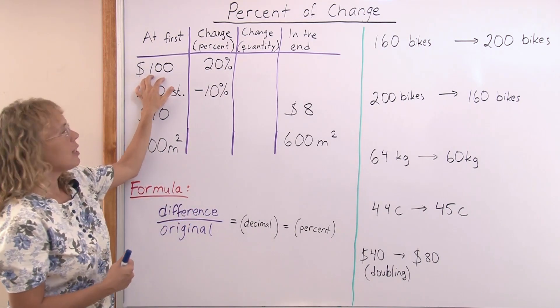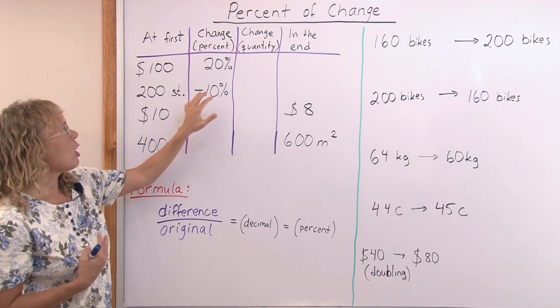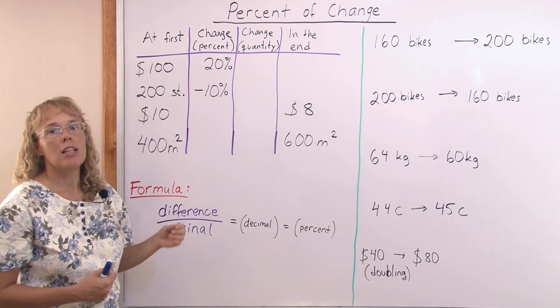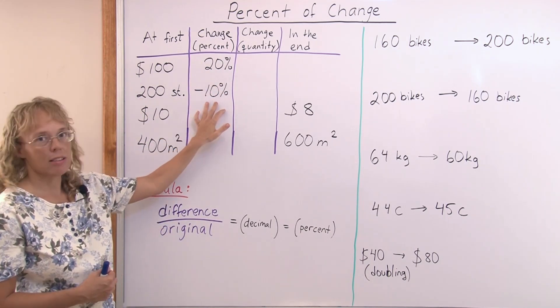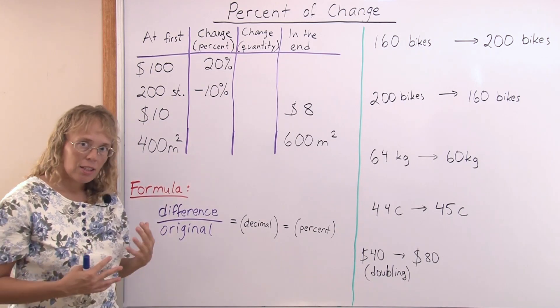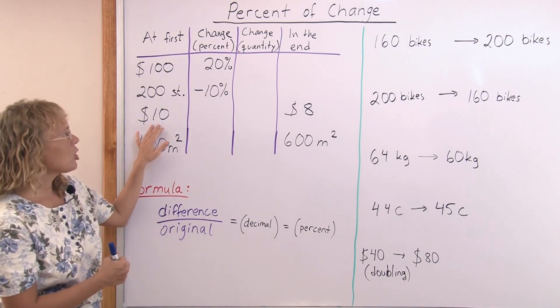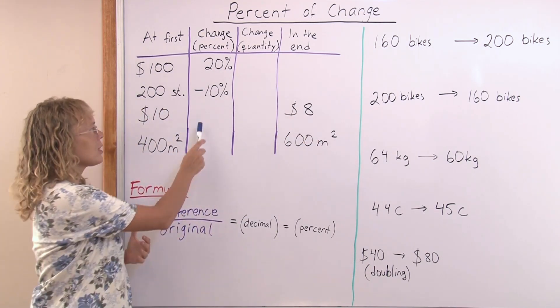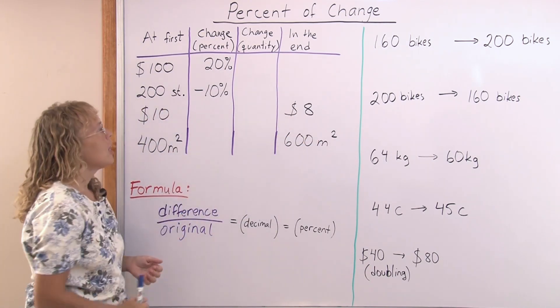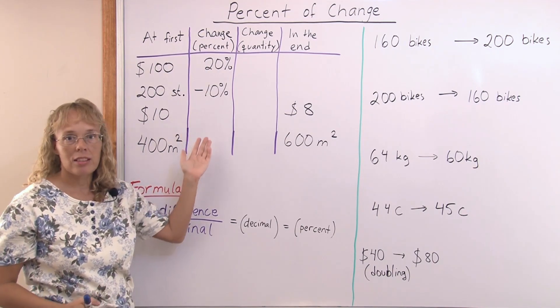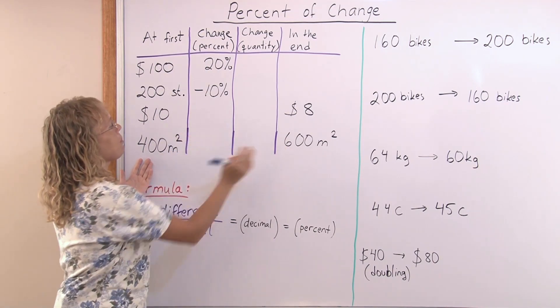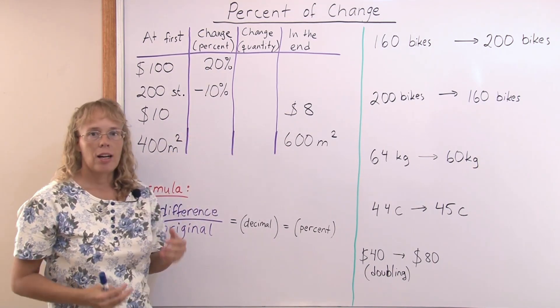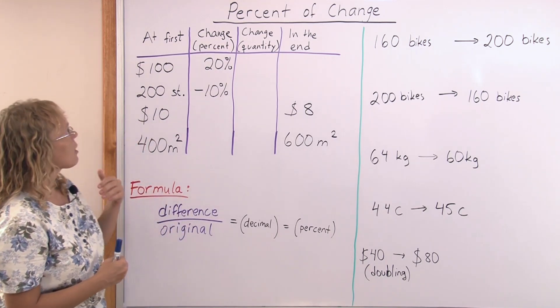That's one kind of problem type for percent of change. It's where you're given the initial quantity and then how many percent the change is, whether it is an increase or a decrease. And then the other kind of problem you can have is you're given the initial and the final quantities, then you're asked what is the percent of change here. How many percent did it increase or decrease?